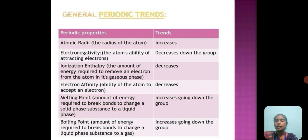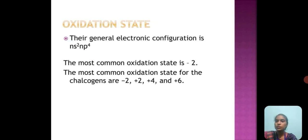These are the basic characteristics of the oxygen family. The atomic radii increase down the group. The electronegativity decreases down the group. Ionization enthalpy decreases down the group as well. Electron affinity also decreases down the group. The melting point increases going down the group and the boiling point also increases going down the group. The general common oxidation state is minus 2. Some other oxidation states of chalcogen family, which is the oxygen family, are plus 2, plus 4, and plus 6.